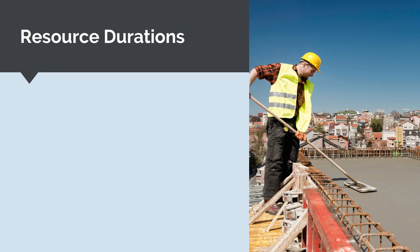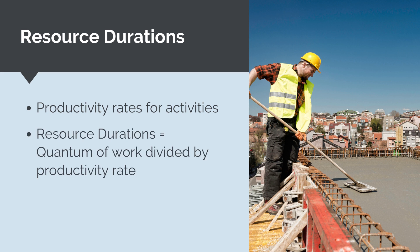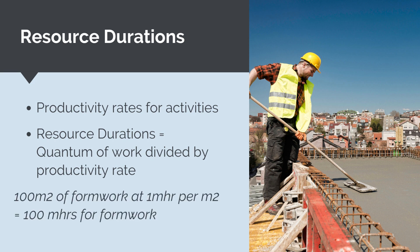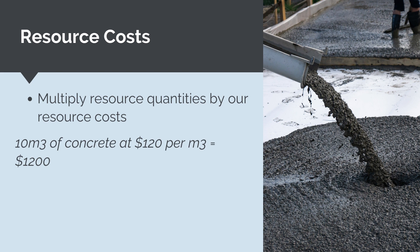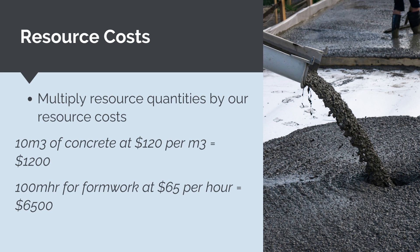Now we know what activities we need to complete and what resources are required, we need to estimate the duration we need those resources based on productivity rates. Our resource duration equals the quantum of work from our bill of quantities divided by our productivity rate. For example, if we need to complete 100 meters squared of formwork at a productivity rate of 1 man-hour per meter squared, then we need 100 man-hours for formwork. We then multiply resource quantities by our resource rates — for instance, 10 meters cubed of concrete at $120 per meter cubed gives $1,200, and 100 man-hours for formwork at $65 per man-hour gives $6,500.